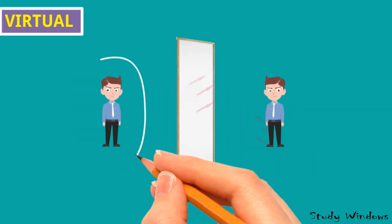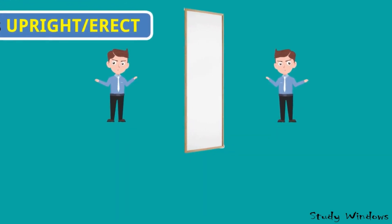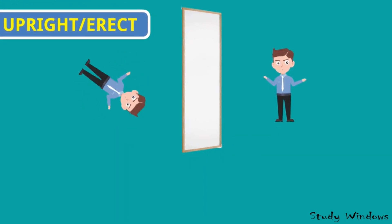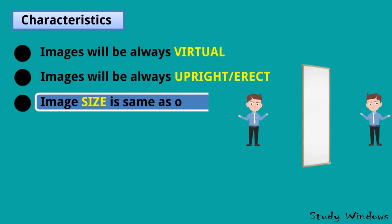This image will always be upright or erect. Look at the same example - my image is not upside down, it will always be like this. So it will be upright or erect. All the images will be upright. Image size is same as object. The size of the real object and image will be the same. If your height is 5 feet, then the image also will be 5 feet. Its size, shape, width - everything will be the same.